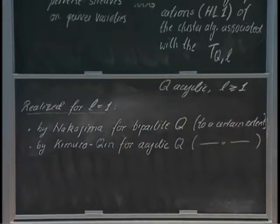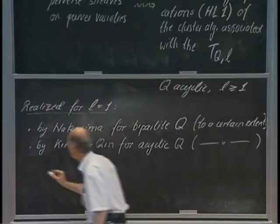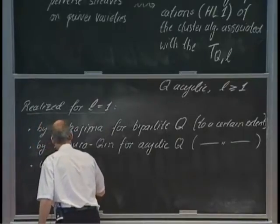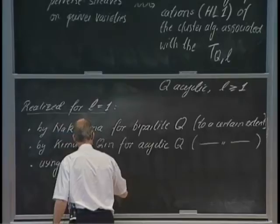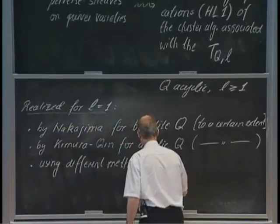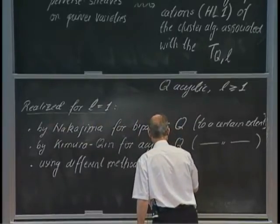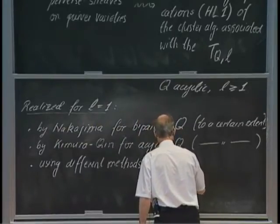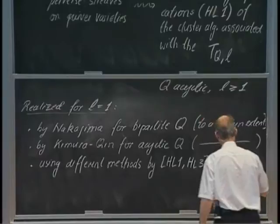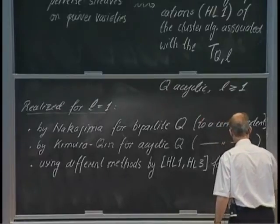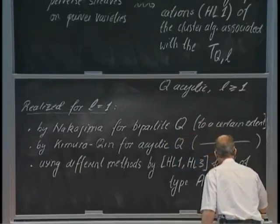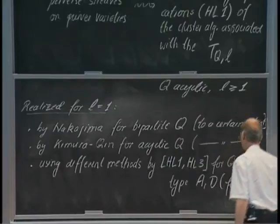And I should also emphasize that using different methods, namely algebraic and combinatorial methods, it was realized by David Hernandez and Bernard Leclerc in their first and their third papers for a queue of type A_N or D_N, and they proved the full categorification statement.